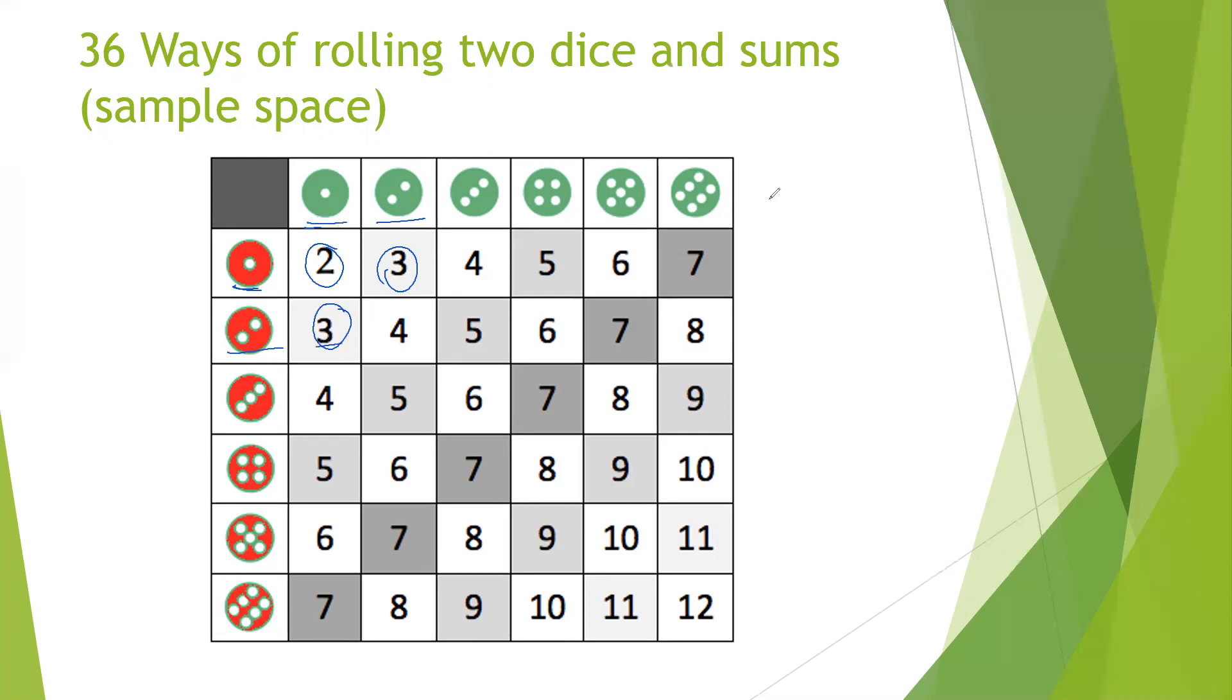And so there's two ways to roll a sum of three. You'll notice that if you wanted a sum of five like in this problem, you can have a four and a one, a three and a two, a two and a three, and a one and a four. Notice that even though this is one plus four and over here we have four plus one, we're going to count it twice because this one the red is a four and this one the green is a four.